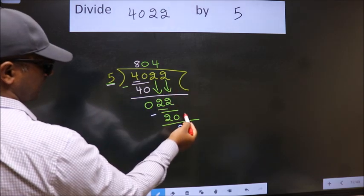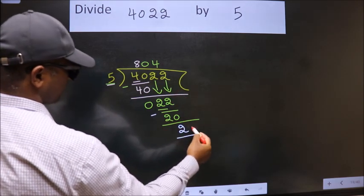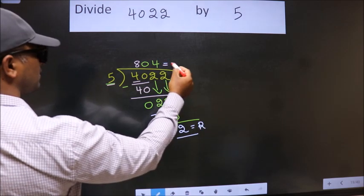No more numbers to bring it down. So we stop here. This is our remainder. This is our quotient.